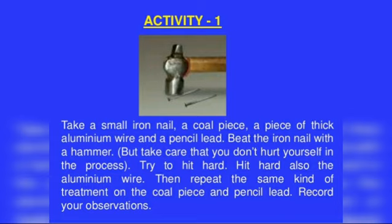What about the pencil lead and coal? They will break into pieces. You may be familiar with silver foil used for decorating sweets — similarly, when you hit the aluminum wire harder it becomes like aluminum foil. You must also be familiar with aluminum foil used for wrapping food like chapati and roti. The property of metals by which they can be beaten into thin sheets is called malleability.